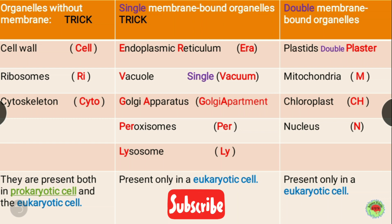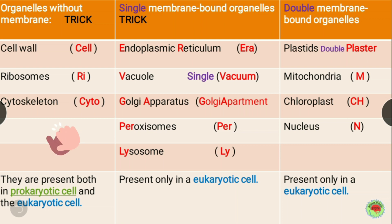There are three organelles without membrane: cell wall, ribosomes, and cytoskeleton. The trick is — cell wall gives 'sal', ribosomes gives 're', and cytoskeleton gives 'cyto'. So the mnemonic forms: 'Sal Re Kato' — meaning 'without salary, cut it' — to remember organelles without membrane. These are present in both prokaryotic and eukaryotic cells.